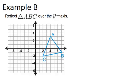In example B, it says reflect triangle ABC over the Y-axis. So here's our Y-axis, it's the vertical line. And when we're reflecting, it's like we're going to flip the triangle across that Y-axis, so it will end up over here.